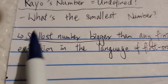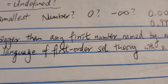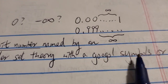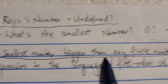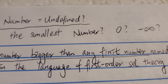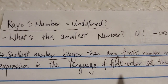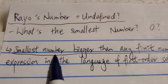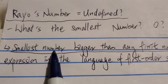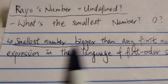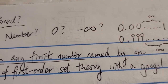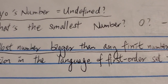Let's look at the definition. Rayo's number is defined as the smallest number bigger than any finite number named by an expression in the language of first-order set theory with a googol symbols or less. The problem is in the first part: 'smallest number bigger than any finite number.' This is true of any number defined this way. There is no smallest number bigger than any finite number — it's undefined, because there are infinite numbers between any two numbers. It's like asking what's the smallest number bigger than one, or bigger than zero.